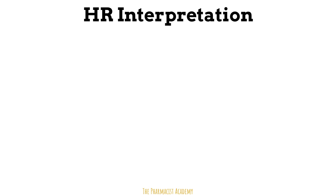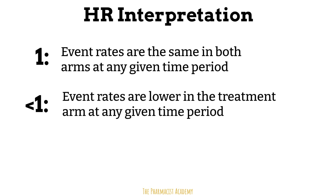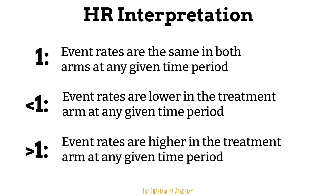For the interpretation of hazard ratios: if it's 1, that means the event rates are the same in both arms at any given time period. If it's less than 1, it means that the event rates are lower in the treatment arm at any given time period. If it's greater than 1, it means the event rates are higher in the treatment arm at any given time period.